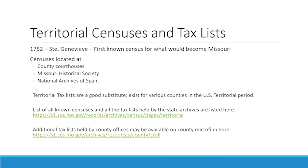Censuses for this time period are located at county courthouses, at the Missouri Historical Society, as well as at the National Archives of Spain — we were able to get copies of those to index and place in our database. Tax lists are the best substitute you'll find for census records and exist for various counties in the U.S. territorial period, covering 1804 through 1820. We do not have any known tax lists for the French or Spanish territorial time period. There is a list of all known censuses and tax lists physically held by the state archives on our webpage.